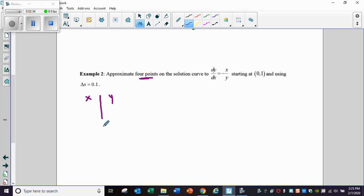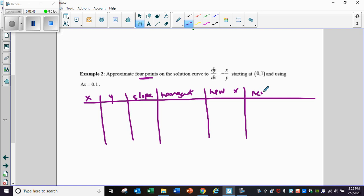So we create our own table here. We have our x and our y. We have our slope. We have the tangent line. We have the new x value, and we have the new y value. Again, you can use this table on the AP exam, but you will have to have the columns memorized. You will need to know what to put in the table.